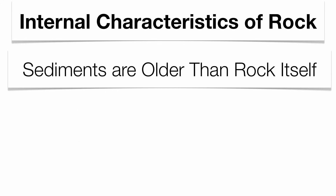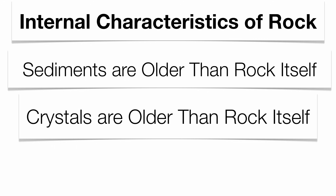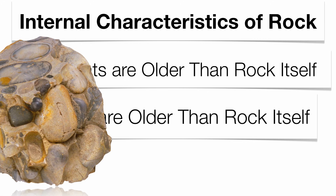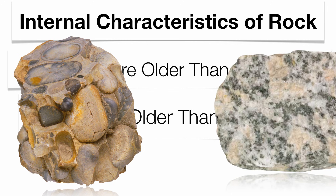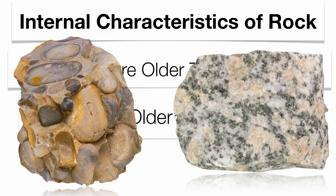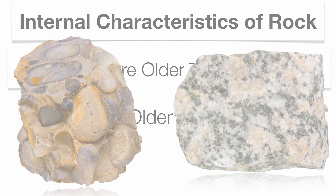You can get really technical in terms of the internal characteristics of rock. The sediments and crystals within the rock are always older than the rock itself. For example, the rock pebbles in conglomerate are older — they had to be there first. Same with the crystals in granite: they had to form before the rock cooled and solidified.